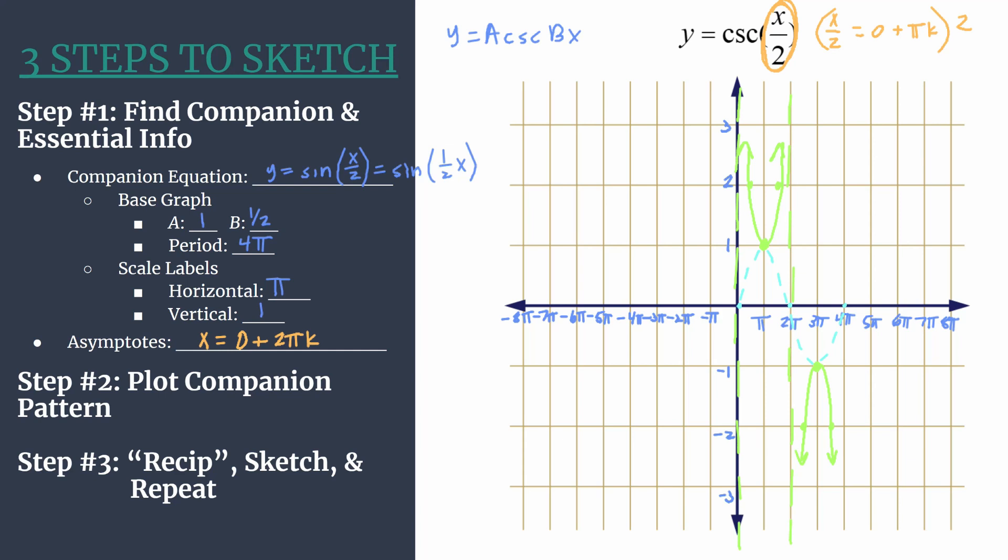All right. So now that we have one cycle of cosecant x over two, we can repeat. And we can do this for as many cycles as we need. So if you just need one, you're done. But we can just keep repeating this pattern. So we have a vertical asymptote here at four pi. That's when you let k equal two. We can just graph that local min right there. And then we have another vertical asymptote. That's when k is three. So hopefully this is helping you see more how that asymptotes equation works. And then we have a curve that has a local maximum here and another vertical asymptote at eight pi. And that's when k is four.